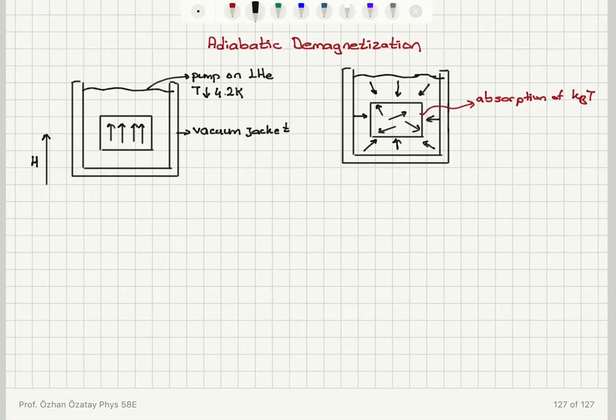Before moving on to ferromagnetism or ferromagnetic interaction, there are a few things I would like to mention. One is it's possible to have a paramagnetic gas. An example is oxygen.